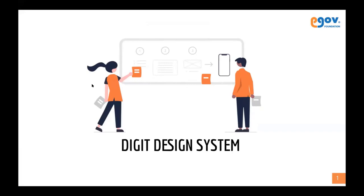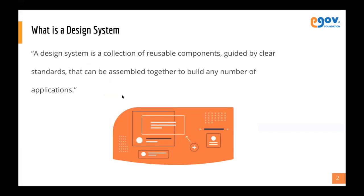So first of all, what is a design system? Basically a design system is a collection of visible components guided by clear standards that can be assembled together to build any number of applications. This is needed when you start building an application that is scaling a lot and has large breadth to cover — mostly used in enterprise applications where modules keep adding and the application becomes larger day by day.